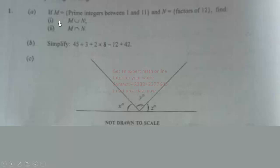Now this is the part b of the question. We are simplifying 45 ÷ 3 + 2 × 8 - 12 + 42. So let's do that.